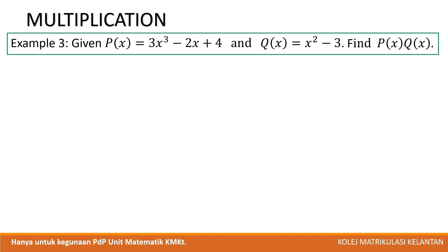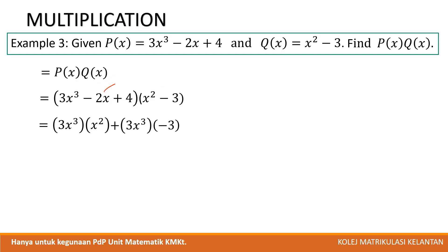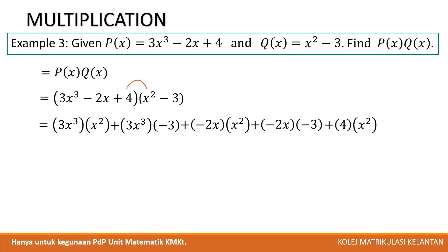Example 3. Given p = 3x³ - 2x + 4 and q = x² - 3. Find p times q. First, we write the polynomials p and q in multiplication notation. In this form, we expand term by term. First, multiply 3x³ by x². Then 3x³ by -3. Then -2x by x². And -2x by -3. Then 4 times x². Then 4 times -3. After that, we simplify each term using index rules.